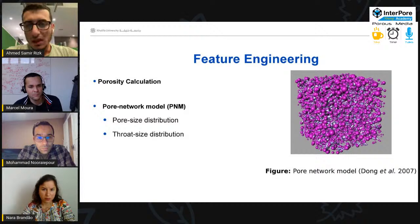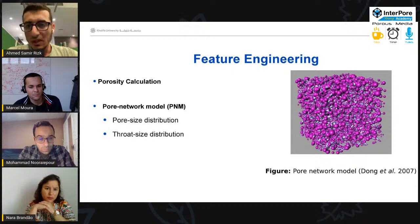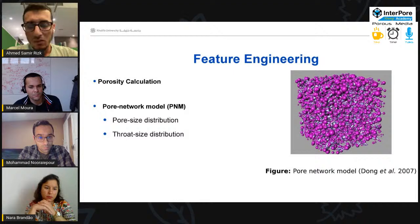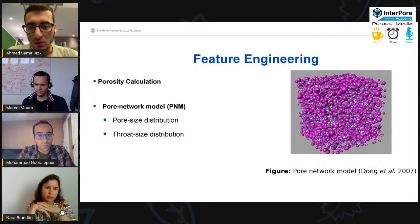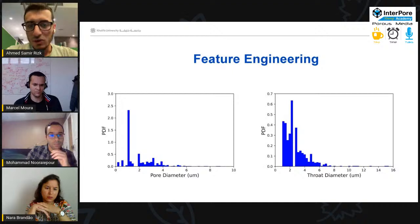After this, we do some feature engineering on this sample. First, we calculate the porosity. The porosity can be calculated easily by dividing the number of pore voxels by the total number of voxels. Also, we use a pore network model that is a simple technique to extract the pore size distribution and the throat size distribution of each sample. This pore network model, it simplifies the pore structure into spheres that represent the pores and cylinders that will connect these pores together. From this simplified model, we can have an idea about the pore size distribution as well as the throat size distribution.